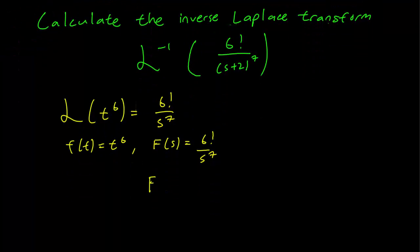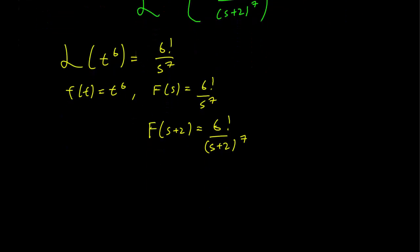But it's clear then that F(s+2) is equal to the function that we want, s plus 2 raised to the 7th power. And we're going to have to write this down as F(s minus negative 2) because it's how our translation formula is set up. So let's look at it.